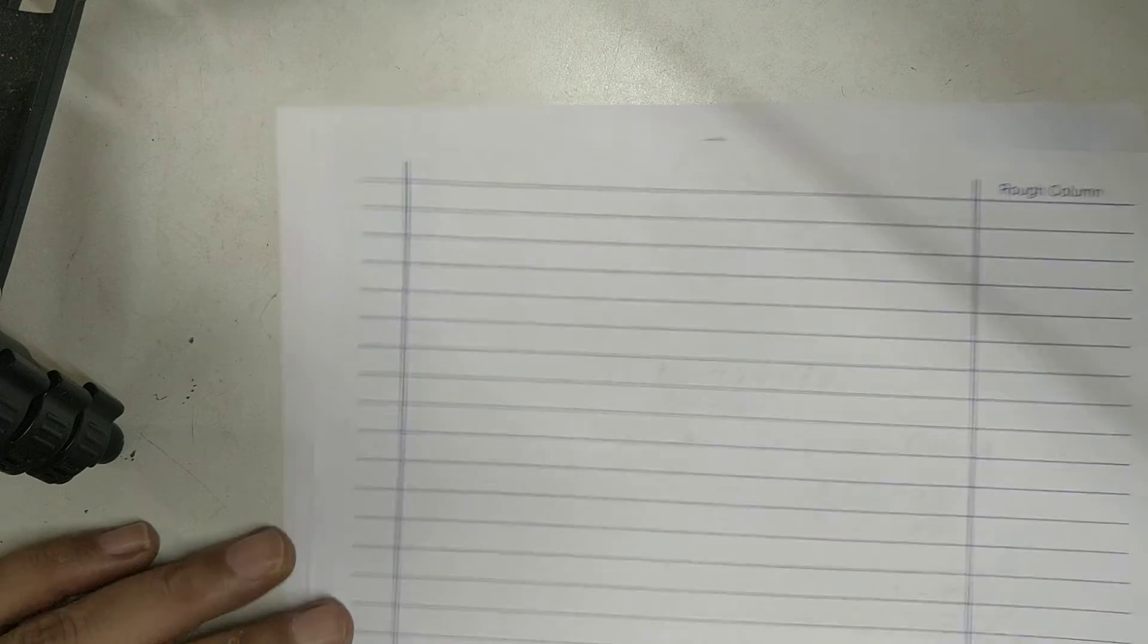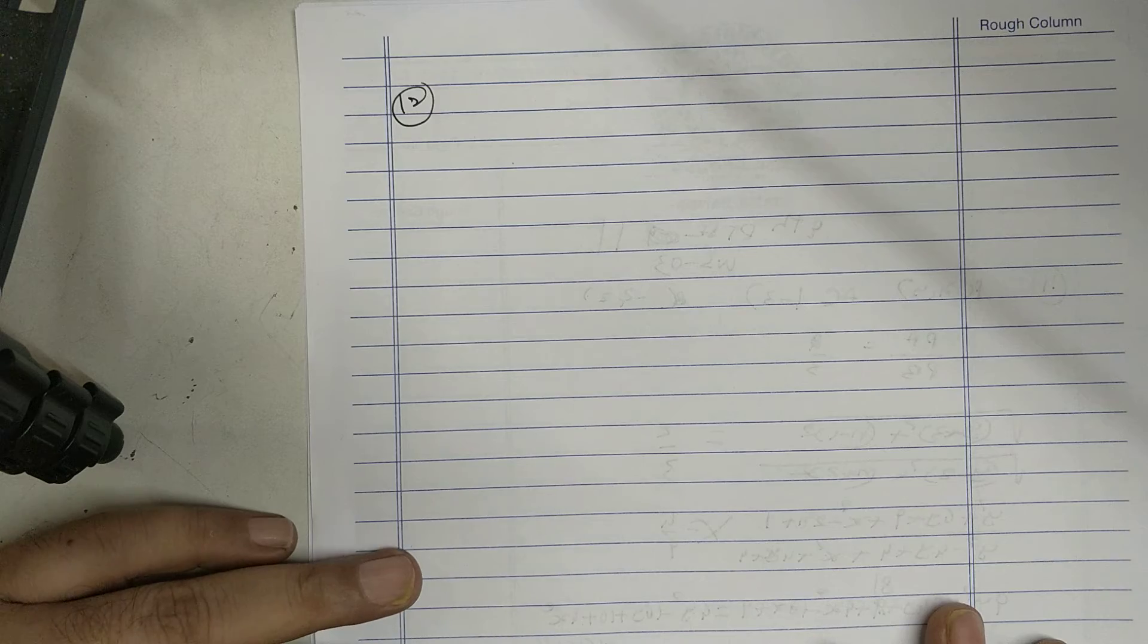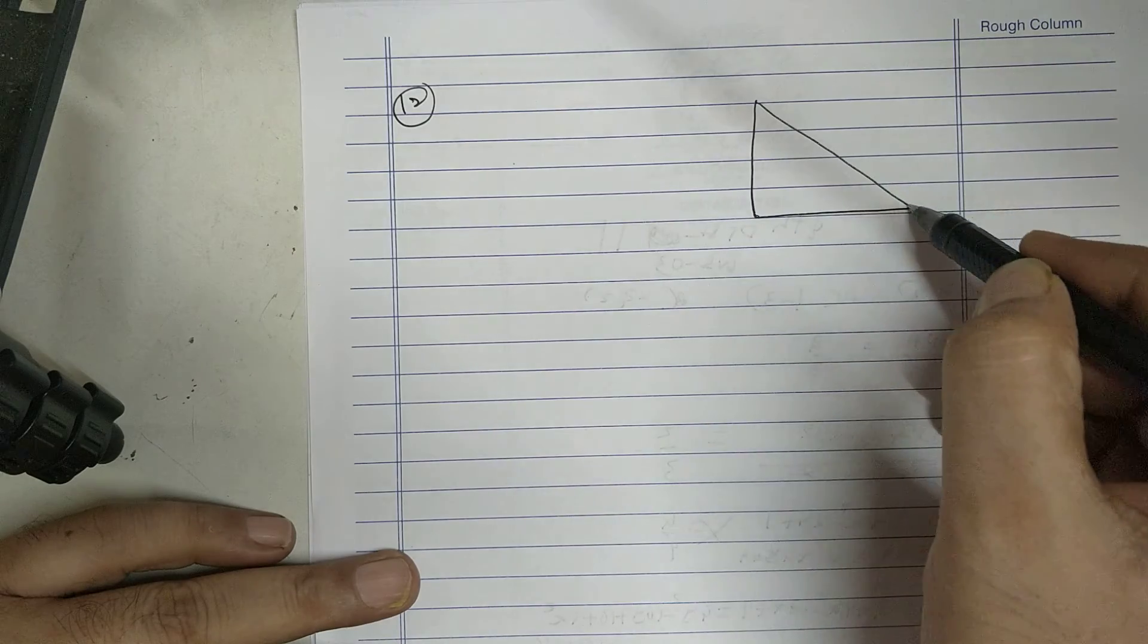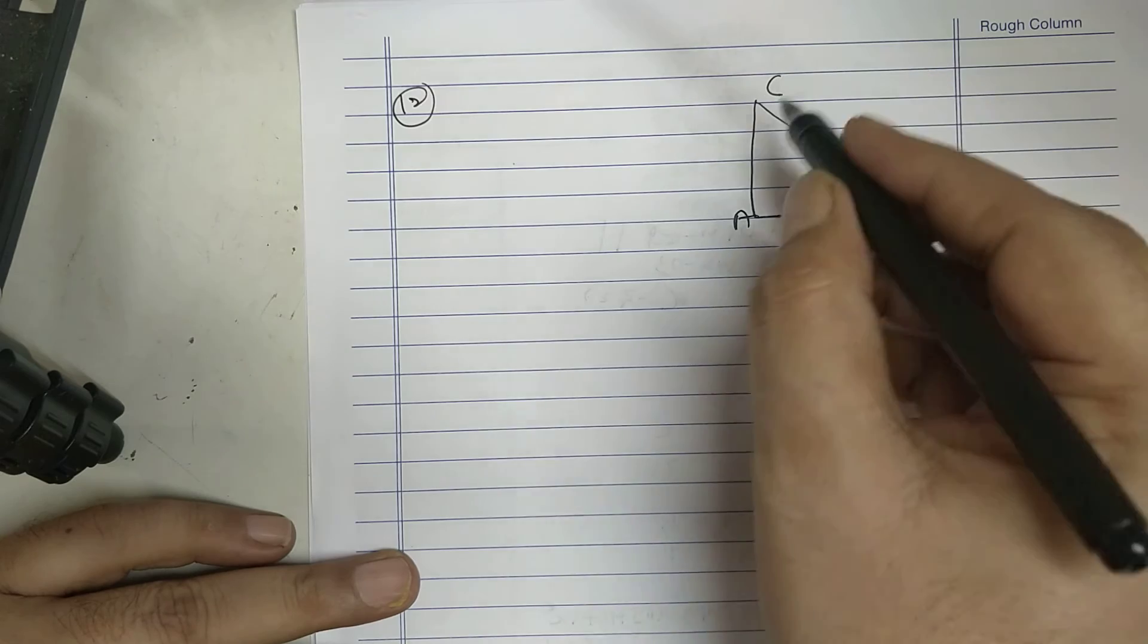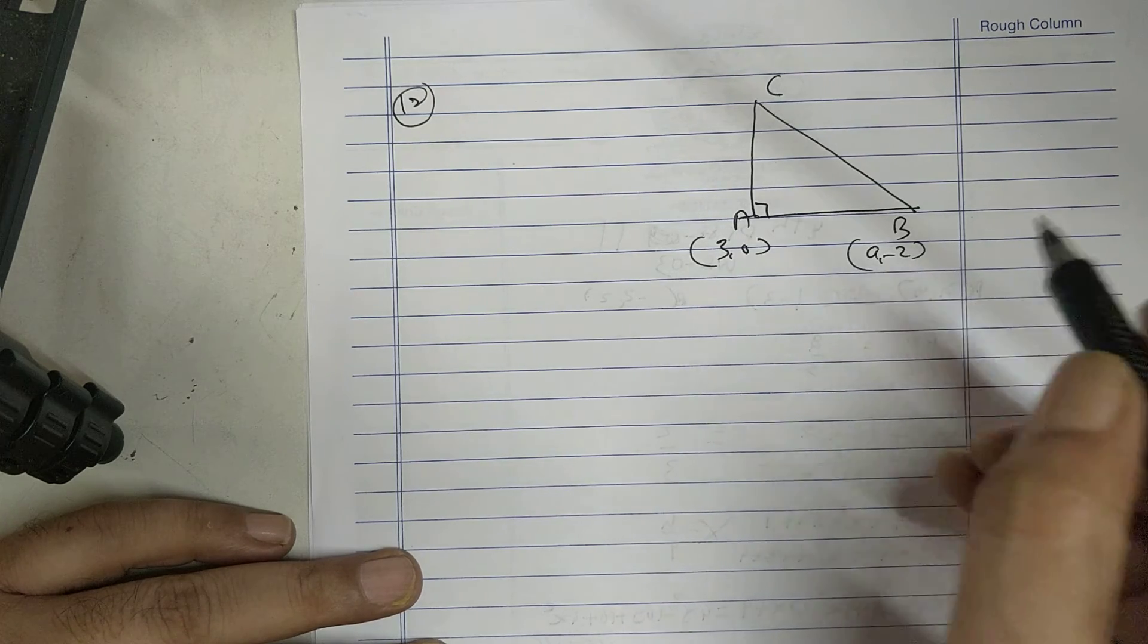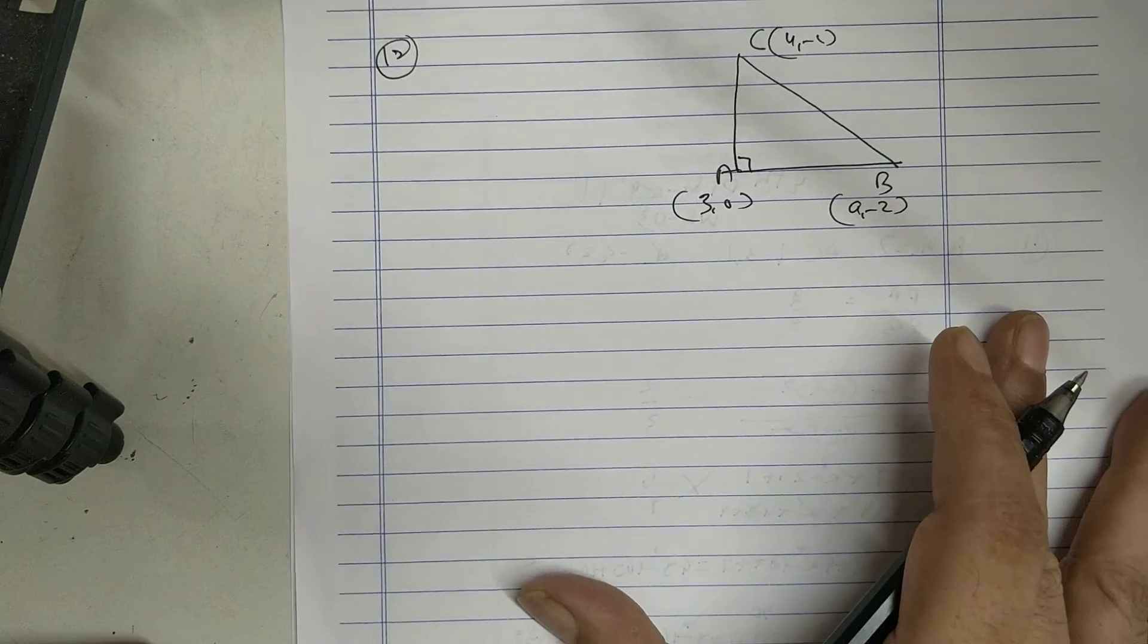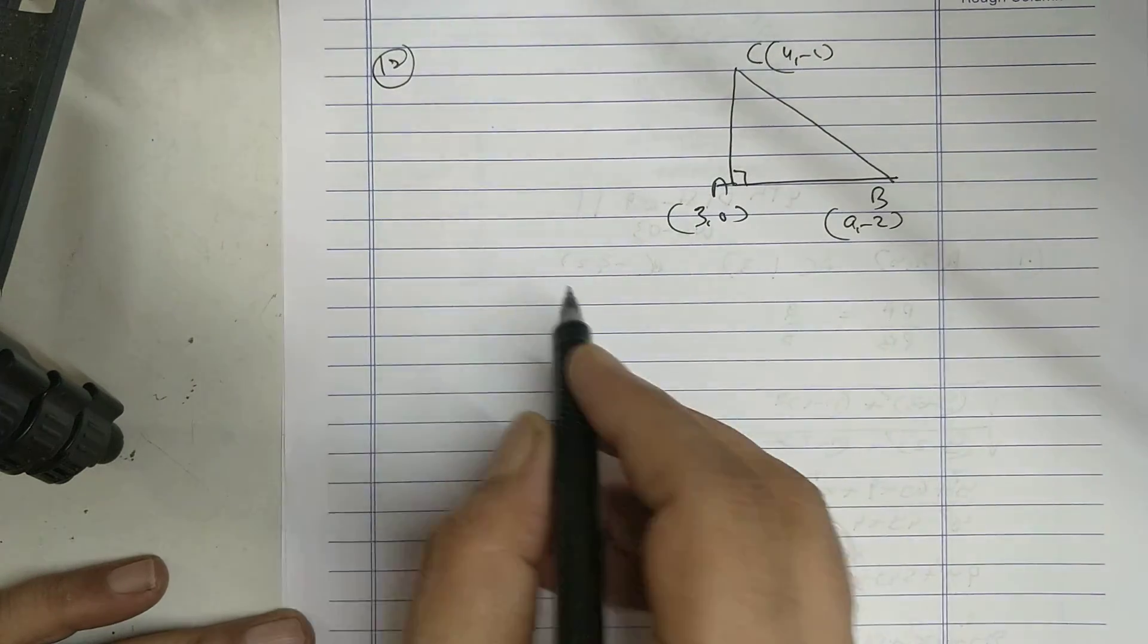Now the last sum, sum number 12. This is B, C, A at 3, 0, A minus A. Find the value of A. It's a right angle triangle. I will find all distances, then I will use Pythagoras theorem, or directly you can use...